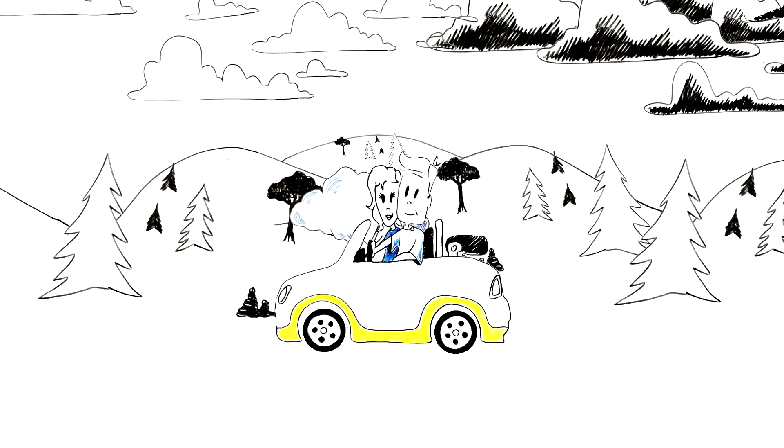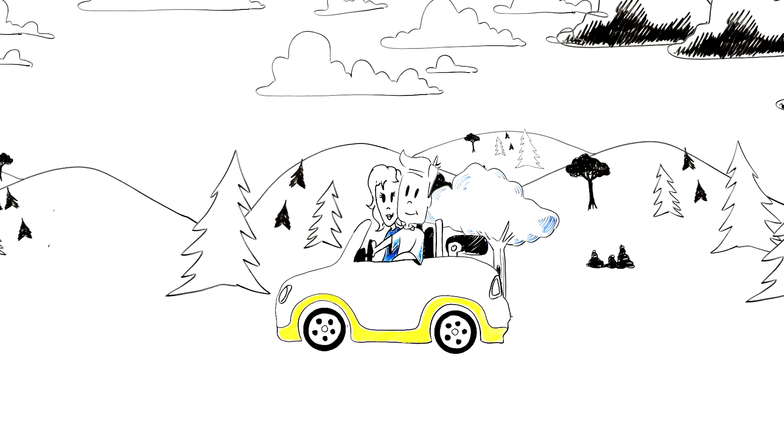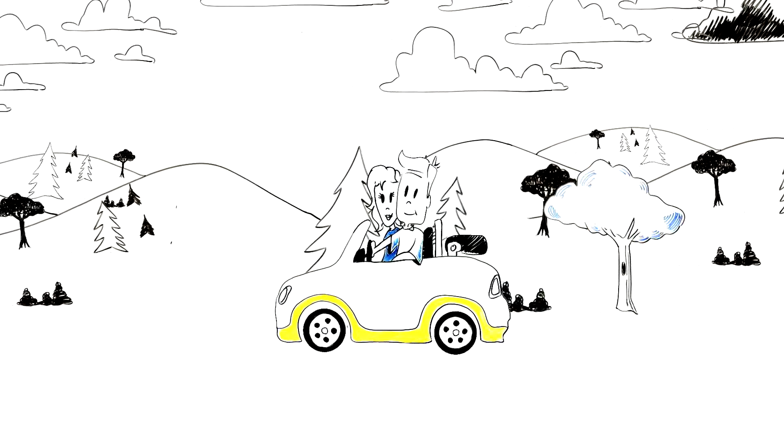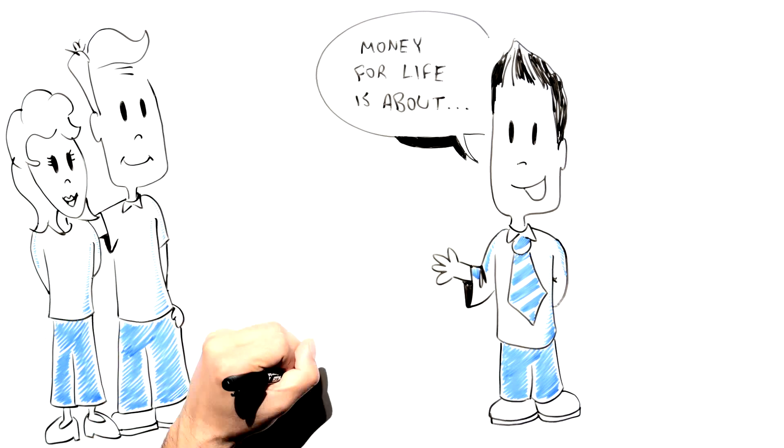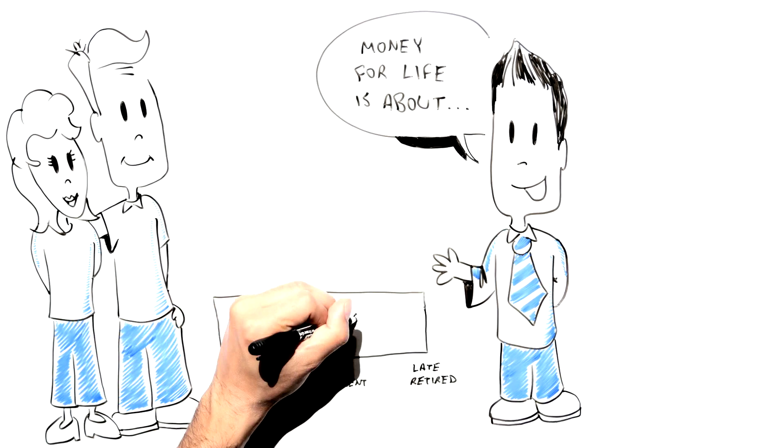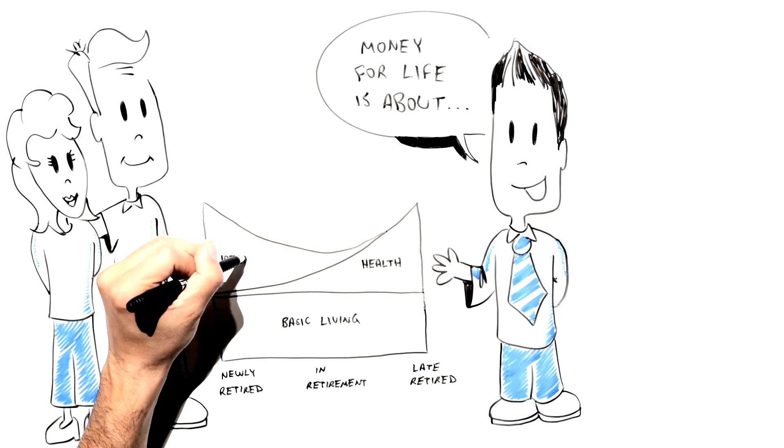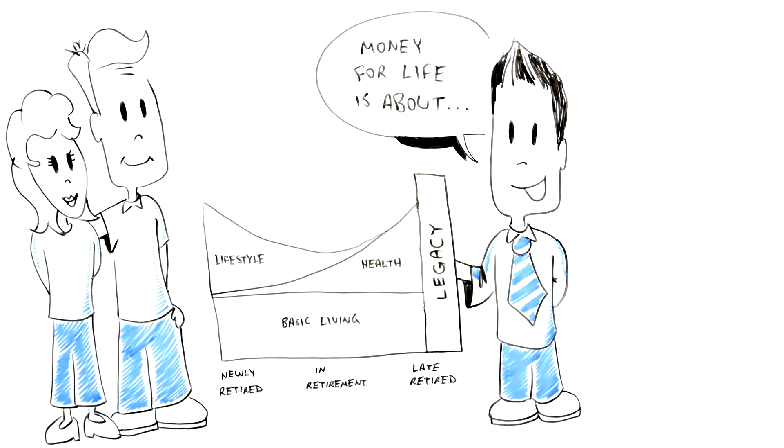Ask your advisor how you can balance risks by making trade-offs and by putting the right solutions in place. To recap, money for life is about working with an advisor to meet your basic needs, health and lifestyle needs, along with leaving a legacy.